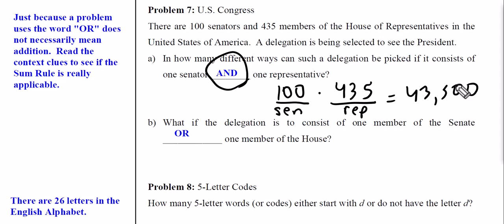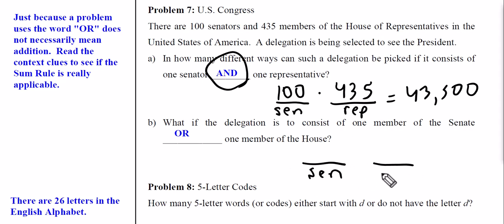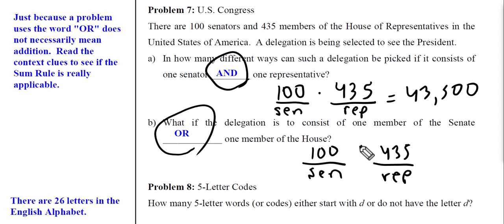Part B: if the delegation could be one member of the Senate or one member of the House, we still have two slots — Senate and Representative — with 100 senators and 435 House members to pick from. But it's an 'or,' so that's only 100 + 435 = 535 options.